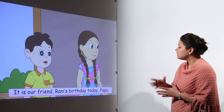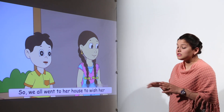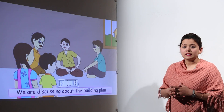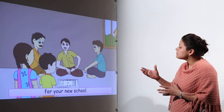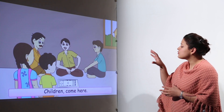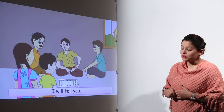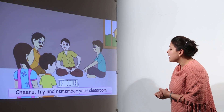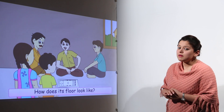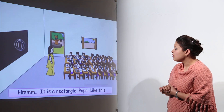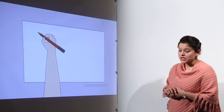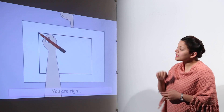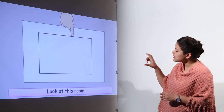On the way back home, they found that their father was busy in a meeting about a new school they were going to have there. He showed them a map for the new school, explaining that before any building is made, its floor map has to be made. He asked the children to think about their classroom — their classroom has a rectangular shape, so we make a rectangular shape like this on the white sheet.